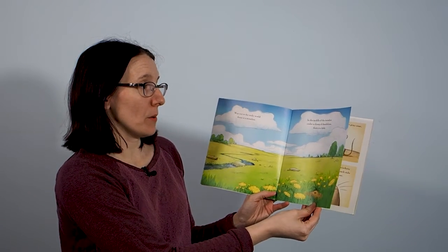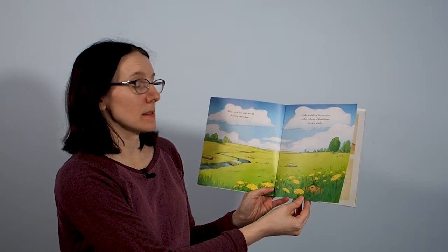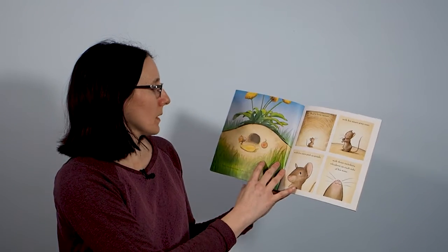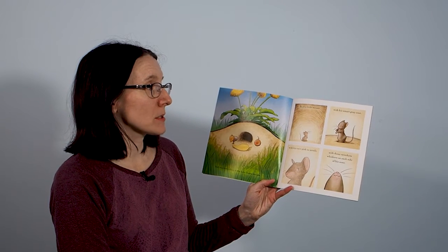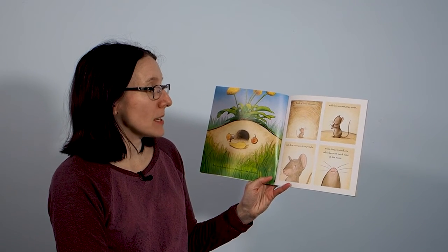Way out in the wide world there is a meadow, and in the middle of the meadow under a clump of dandelions there is a hole. And way down deep in the hole lives a mouse, such a little mouse with his smart gray coat, with his ears pink as petals, with three twitchery whiskers on each side of his nose.